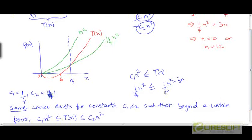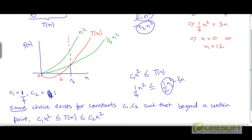What happens when n grows large? As n grows large, half of n squared is going to dominate the value of this expression. The magnitude of this lower order term is going to become relatively insignificant compared to half of n squared. And on the left hand side, you have a function that is 1/4 of n squared.